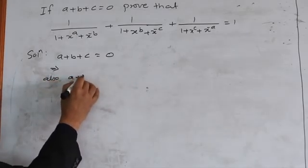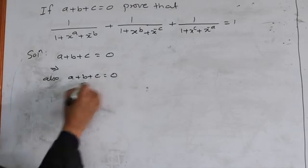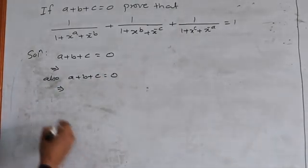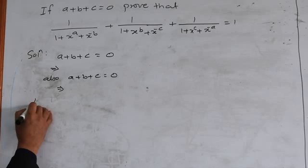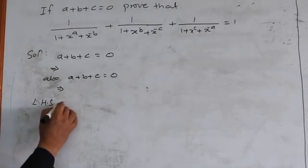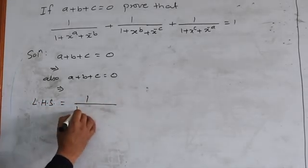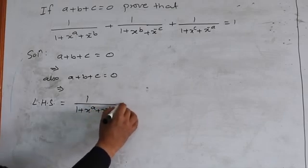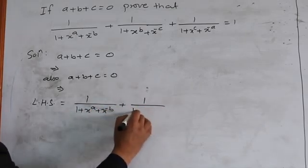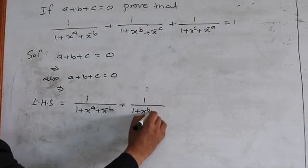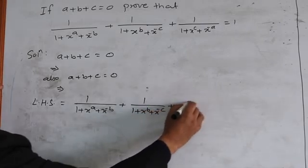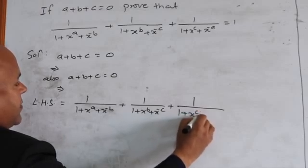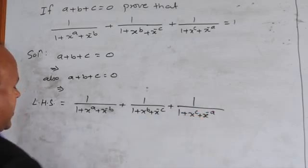a plus b plus c is equal to 0 — we will leave a gap here to fill in later. Now let us start from the left hand side. The left hand side is: 1 upon 1 plus x raise to the power a plus x raise to the power minus b, plus 1 upon 1 plus x raise to the power b plus x raise to the power minus c, plus 1 upon 1 plus x raise to the power minus a.